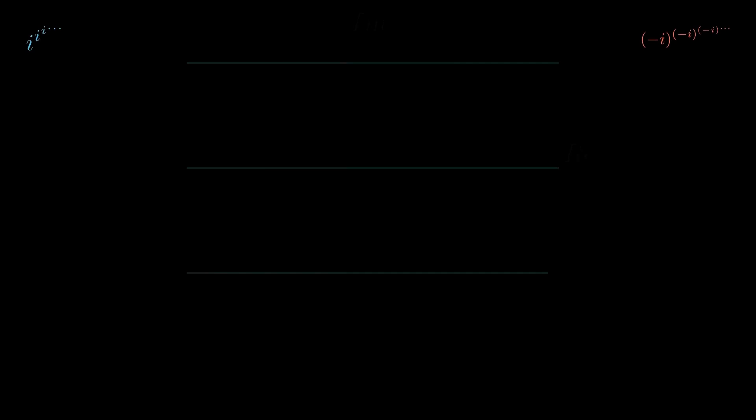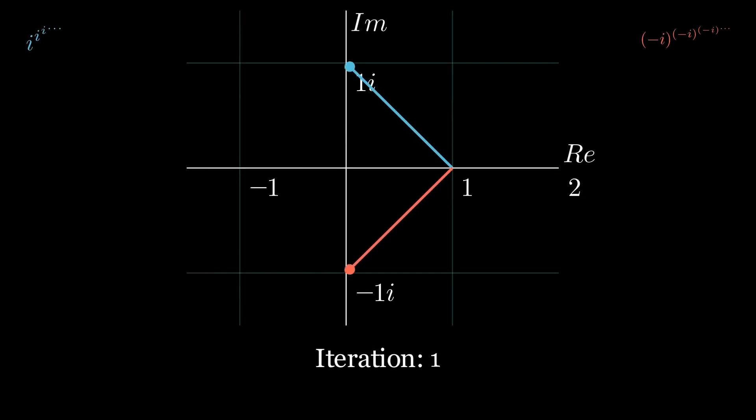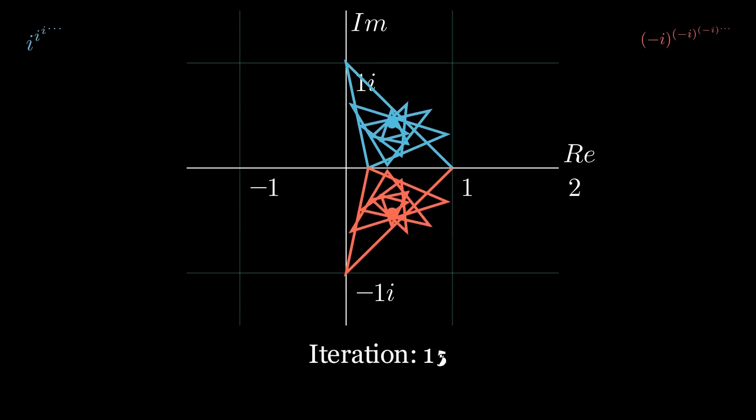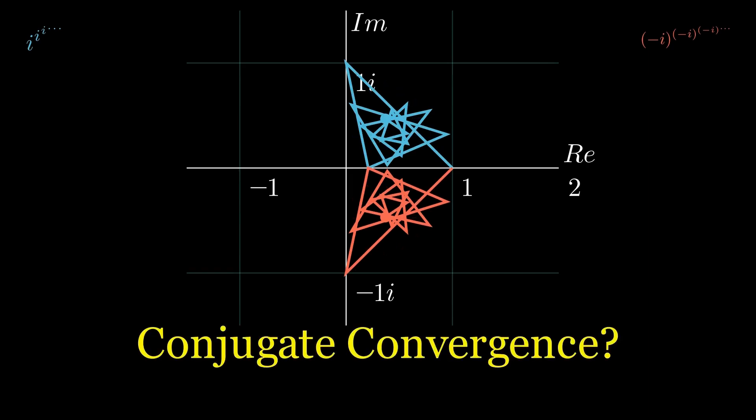At first, both towers seem chaotic. But as we iterate, patterns begin to emerge. And remarkably, do they converge to the same place, or to two points that mirror each other? Let's explore why.